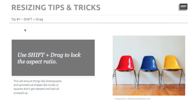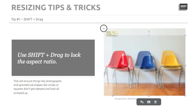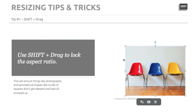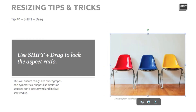Tip number one: to resize an object but keep the aspect ratio the same, hold down the shift button on your keyboard, then resize the object from the corner. This way, photographs and other fixed aspect ratio images or shapes will never look skewed.